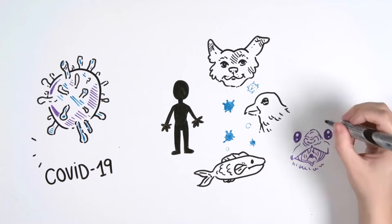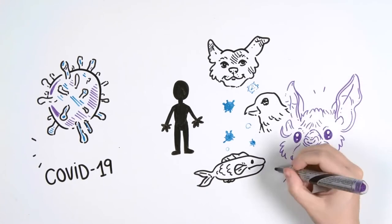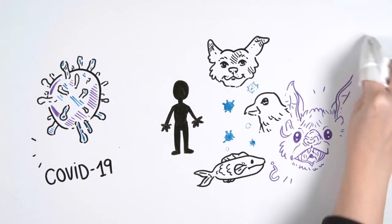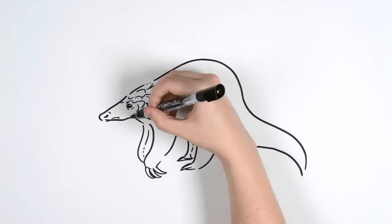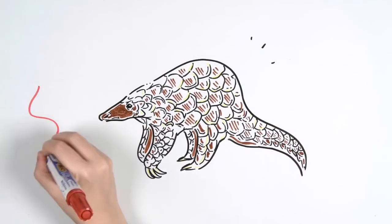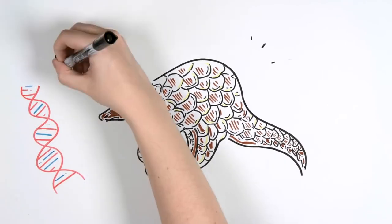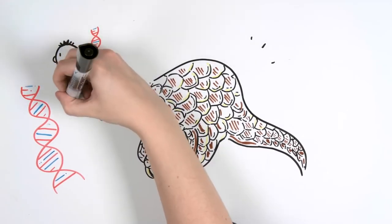Investigations into the possible transmitter pointed to bats, but new studies put that to the test. The pangolin is suspected to be the animal responsible for the coronavirus outbreak. The sequences of the virus genome in this mammal concern 99% of those of those infected.